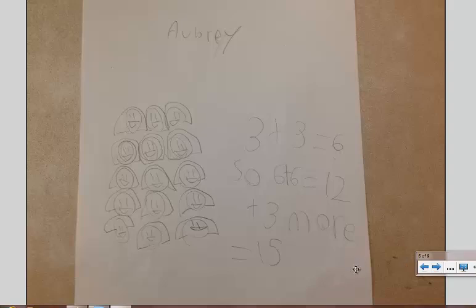Aubrey drew smiley faces, and her repeated addition sentence was a little different. She was able to use the distributive property. She knew that her first two rows were 3 plus 3, so her first two rows and her second two rows are 6 plus 6, and then she adds 3 more to make 15.